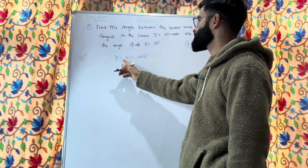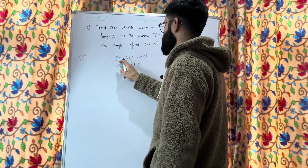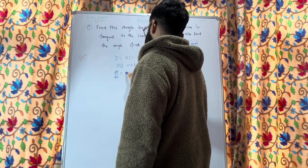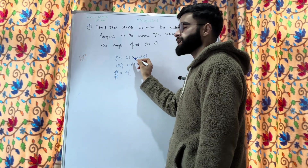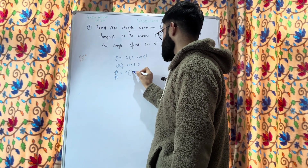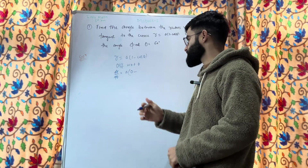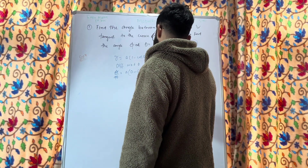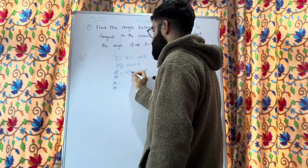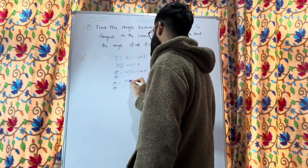We need to differentiate this equation with respect to θ. So dr/dθ = a times the derivative of (1 − cosθ). The differentiation of the constant 1 is 0, and the differentiation of cosθ is −sinθ. Therefore, dr/dθ = a sinθ.